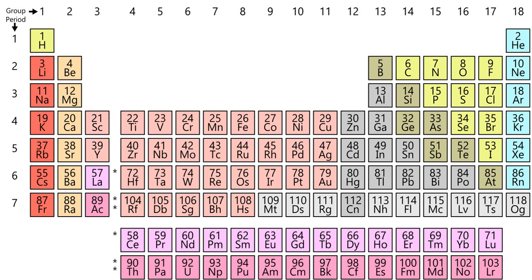Krypton has a density of 3.749 × 10⁻³ g/cc, liquefies at −153.415°C, and solidifies at −157.37°C. It has a high ionization energy (1,350.8 kJ/mol), low electron affinity (estimated at −60 kJ/mol), and high electronegativity (2.94 on the Allred-Rochow scale). Krypton can be reacted with fluorine to form the difluoride, krypton difluoride (KrF2). The reaction of KrF2 with B(OTeF5)3 produces an unstable compound, Kr(OTeF5)2, that contains a krypton-oxygen bond.